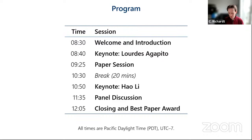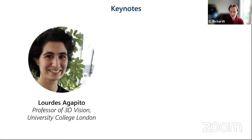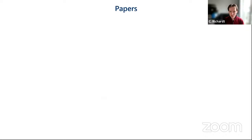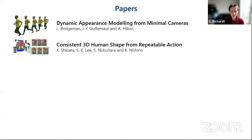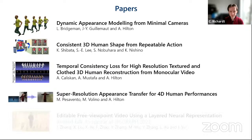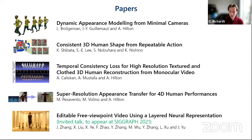We will have two keynotes. The first keynote is by Lourdes Agapito, a professor of 3D vision at University College London. Our second keynote is by Hauer Lee, the CEO and co-founder of Pinscreen Incorporated and a distinguished fellow at the University of California at Berkeley. We have five exciting paper presentations on dynamic appearance modeling from minimal cameras, consistent 3D human shape from repeatable action, temporal consistency loss for high resolution textured and clothed 3D human reconstruction from monocular video, super resolution appearance transfer for 4D human performances, and an invited SIGGRAPH 2021 paper on editable free viewpoint video using a layered neural representation. At the end of the workshop, we will present the best paper award among the first four presenters.